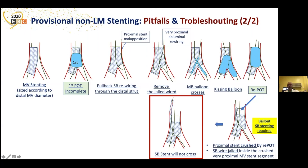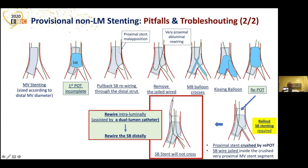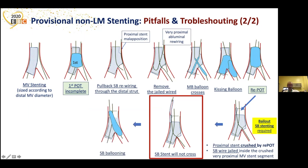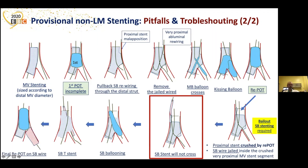You can catch the stent or lose the stent. What is suggested in this case is to rewire intraluminally, possibly assisted by a dual-lumen catheter, and rewire the side branch distally. If this is not possible, take a small 1.25 balloon, go inside the crushed portion, dilate it with a bigger balloon, and create space to cross in that crushed position. Then reach the T position, implant your stent as a bailout, do the kissing balloon, and finish with the final POT. But this time, you must POT on the side branch guide wire — otherwise you re-crush everything again.